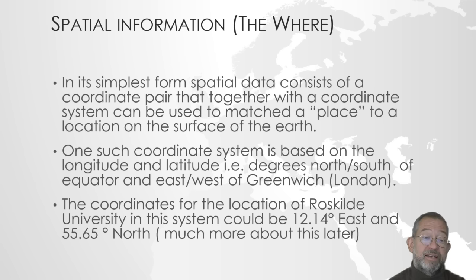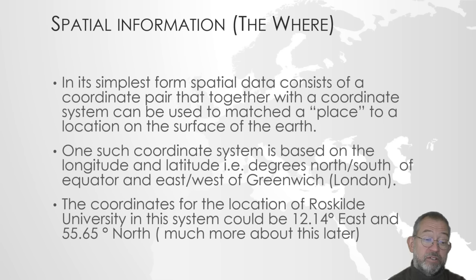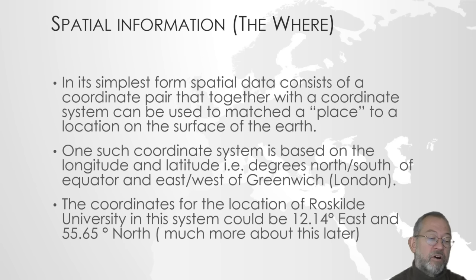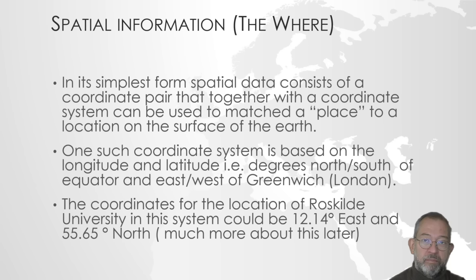The spatial information — the where — is of course what most of this course is about. In its simplest case, it is basically a coordinate pair, x and y, specifying a place or matching a place to a location on the surface of the Earth. One such coordinate system is based on the concept of latitude and longitude — degrees north and south of the equator, and east and west of Greenwich. In this system, the location of the university would be 12.14 degrees east of Greenwich and 55.65 degrees north of the equator. We'll talk much more about how coordinate systems function and how they are specified later.